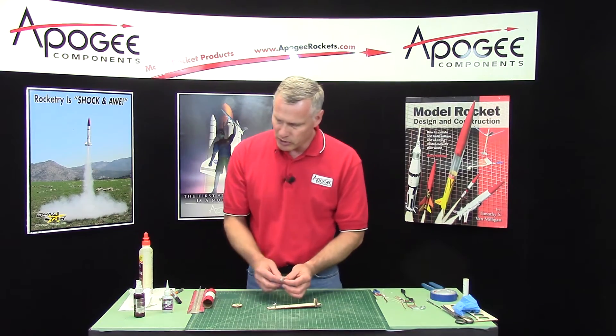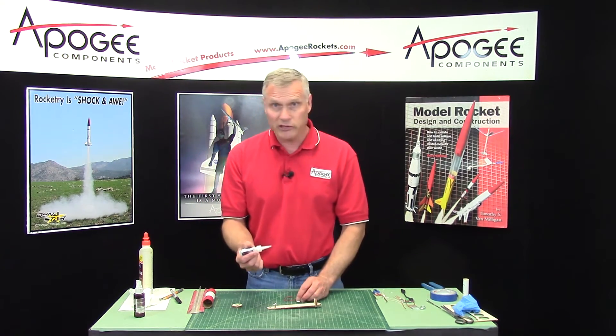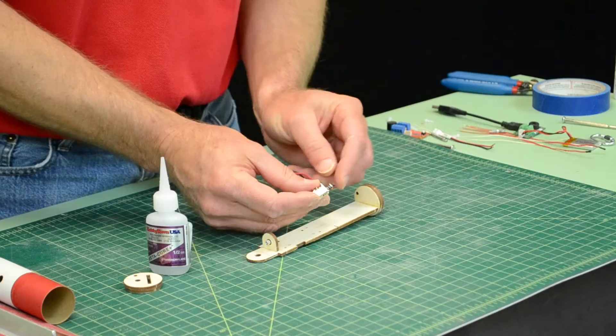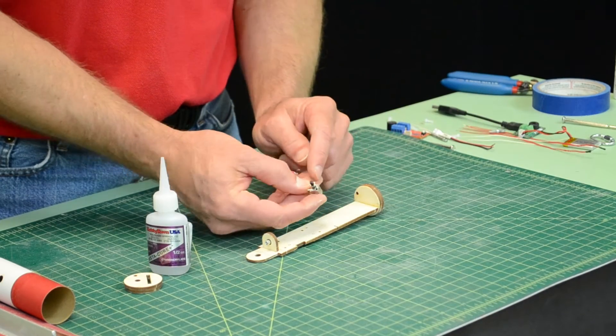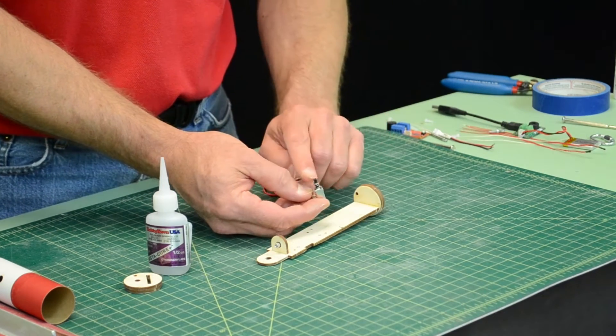To attach this to the board, I'm going to use thick super glue, and I only want to use a very small drop. Because if you use too much, there's a chance you could get glue that will ooze out and get into the spring or into the little holes here and get inside and lock this up.